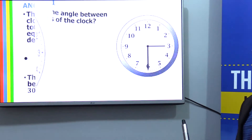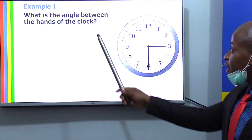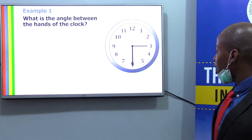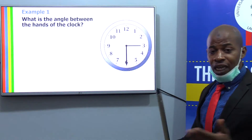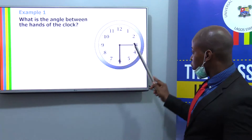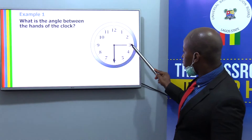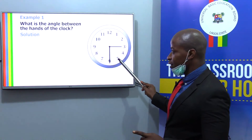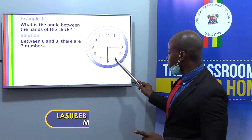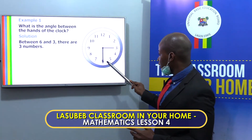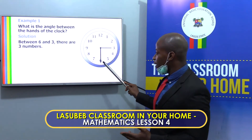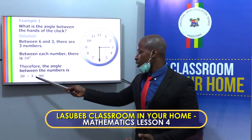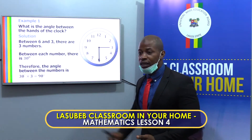Let's see how we can apply this to solve some real problems. Example 1 says: what is the angle between the hands of the clock right now? As we said, between each number there is 30 degrees. From here to here: 30 degrees. From here to here: 30 degrees. From here to here: 30 degrees. There are three spaces, so we multiply 30 by 3 and we get 90 degrees. 30 times 3 is 90 degrees — that is my final answer.